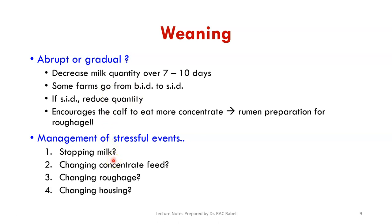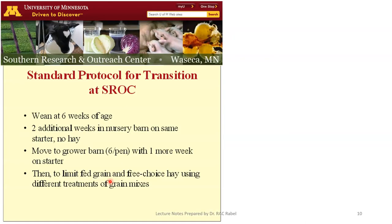Gradual change applies not only to milk but also to concentrate feeds — transitioning from calf starter to adult feed — and to roughage, changing from straw to fresh grass, hay, or silage. Changes in housing also need to be managed gradually without introducing abrupt changes. All these stressful events need to be spread out.